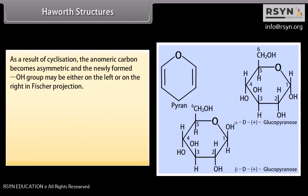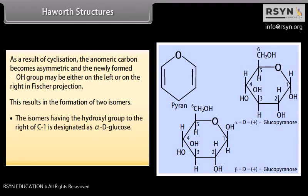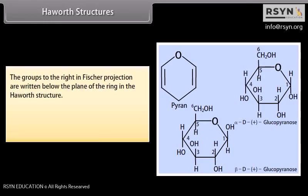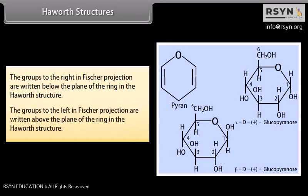As a result of cyclization in Haworth structures, the anomeric carbon becomes asymmetric and the newly formed OH group may be either on the left or on the right in Fischer projection, resulting in two isomers. The isomer having the hydroxyl group to the right of C1 is designated as alpha-D-glucose, and that with the hydroxyl group to the left of C1 is designated as beta-D-glucose. The lower thickened edge of the ring in Haworth structure is nearest to the observer. Groups to the right in Fischer projection are written below the plane of the ring, and groups to the left are written above the plane.